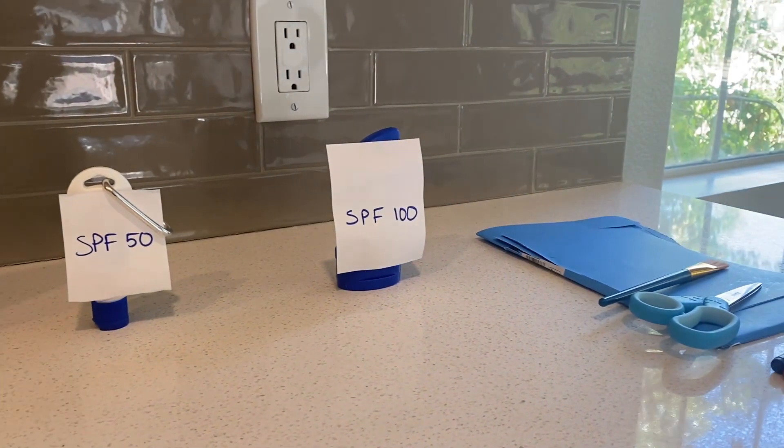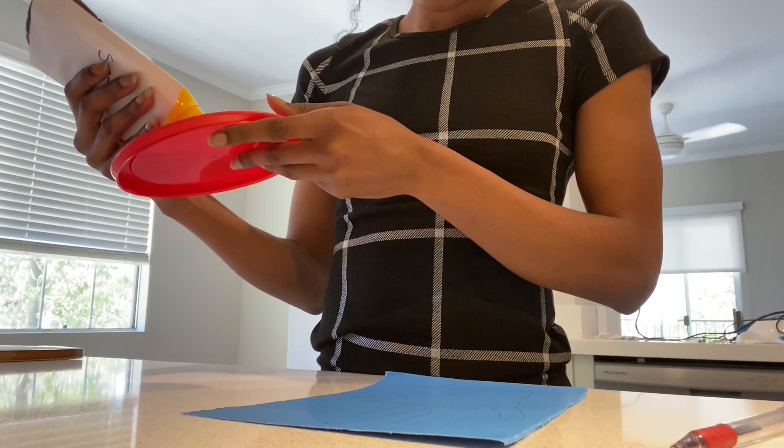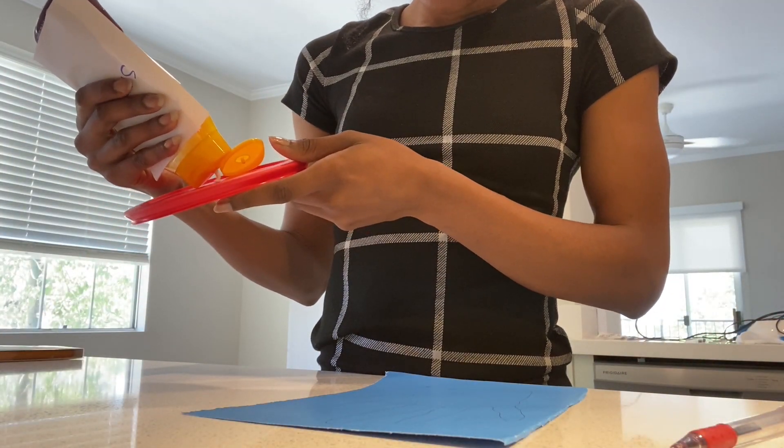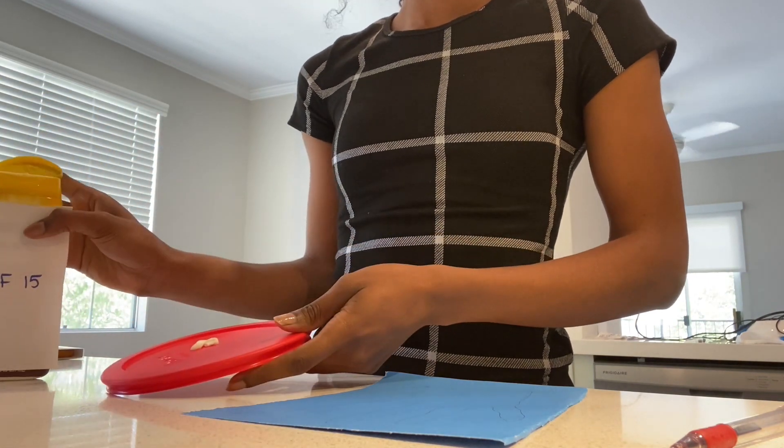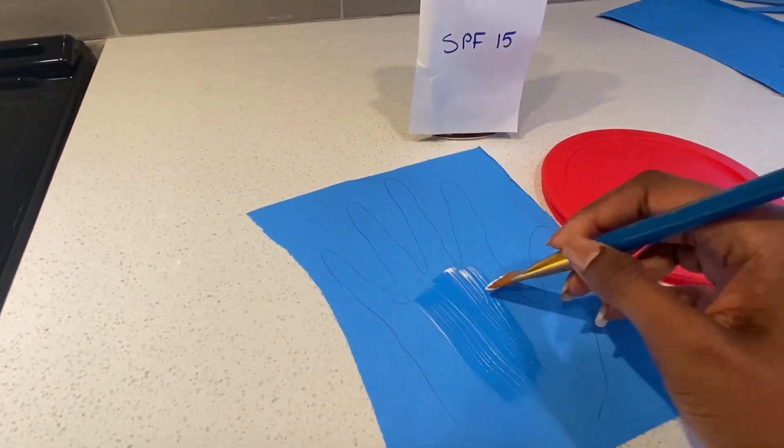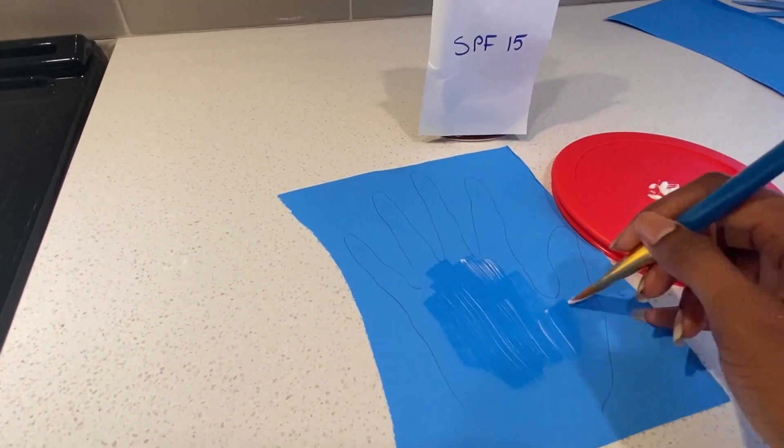Start by putting a small amount of sunscreen onto a plate. Then, using your brush, paint your sunscreen creation onto the paper.